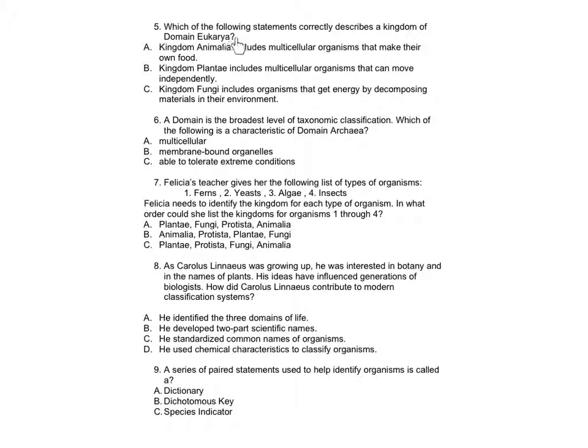Number 5: Which of the following statements correctly describes a kingdom of domain Eukarya? A: Kingdom Animalia includes multicellular organisms that make their own food. B: Kingdom Plantae includes multicellular organisms that can move independently. C: Kingdom Fungi includes organisms that get energy by decomposing materials in their environment.